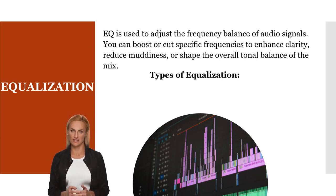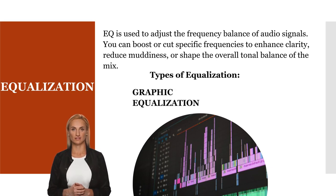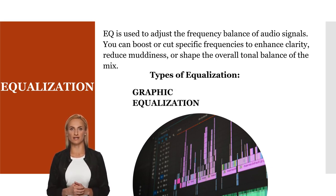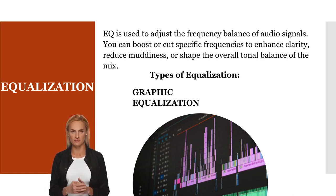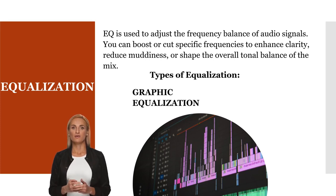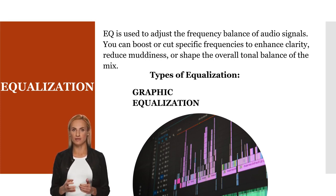Graphic Equalization consists of a series of faders or sliders, each representing a specific frequency band. You can raise or lower the level of each band to adjust the overall frequency balance of the audio signal.